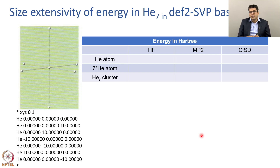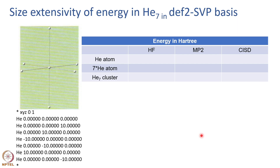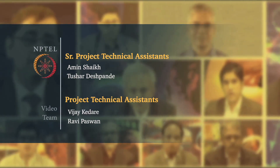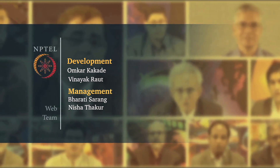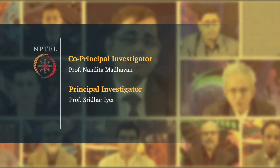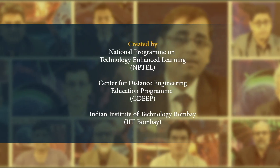In this lecture we have learned about configuration interaction, its merits and demerits, and we have seen that truncated configuration interaction does not follow size extensivity — the correct scaling behavior of energy with respect to the number of electrons — which is why it cannot be used for practical applications. We need to use methods that follow size extensivity, and one such method is coupled cluster. In the next class we will see that even with a truncated form of the wave function, coupled cluster gives size-extensive energies.